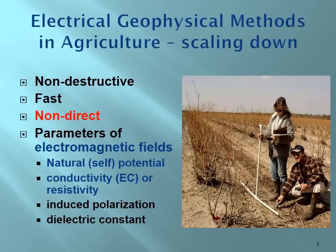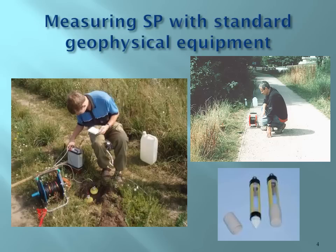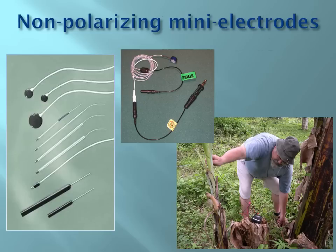Methods can also measure induced polarization and the electric constant, but those properties were not very popular in agricultural applications. However, measuring self-potential with standard geophysical equipment in agriculture is very difficult. Standard electrodes are very big, need grounding, and require pouring conductive solution around them — the equipment is very big and difficult to apply to soil samples or plants. That's why in our studies we used and adapted medical mini-electrodes that can be used with a LandMapper device to measure electrical potential between plants and soil.